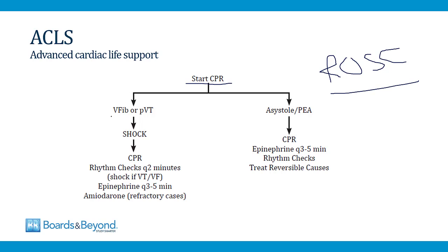If the underlying rhythm is ventricular fibrillation or pulseless ventricular tachycardia, the next step is to shock. If the underlying rhythm is asystole or PEA, a shock is not advised because these are non-shockable rhythms. In patients with V-fib or pulseless VT, after you deliver a shock, if you achieve return of spontaneous circulation you stop. If the rhythm persists and the patient remains in cardiac arrest, you go back to doing CPR — remember, when you're not doing CPR you're not circulating blood through the patient's body.